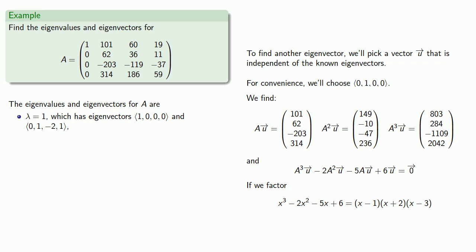And we've already determined the eigenvectors for the eigenvalue 1. So we want to find the eigenvectors for the eigenvalues -2 and 3. So going through that process, we find that lambda equals -2 has eigenvector (1, 1, -3, 4). And lambda equals 3 has eigenvector.